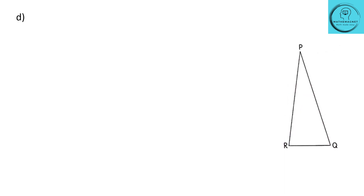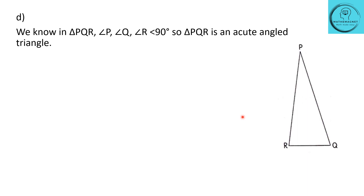In question D, they have given us triangle PQR. In this triangle, angle P is an acute angle, angle R is an acute angle, and angle Q is also an acute angle. Since all three angles of triangle PQR are less than 90 degrees, we can say triangle PQR is an acute-angled triangle.